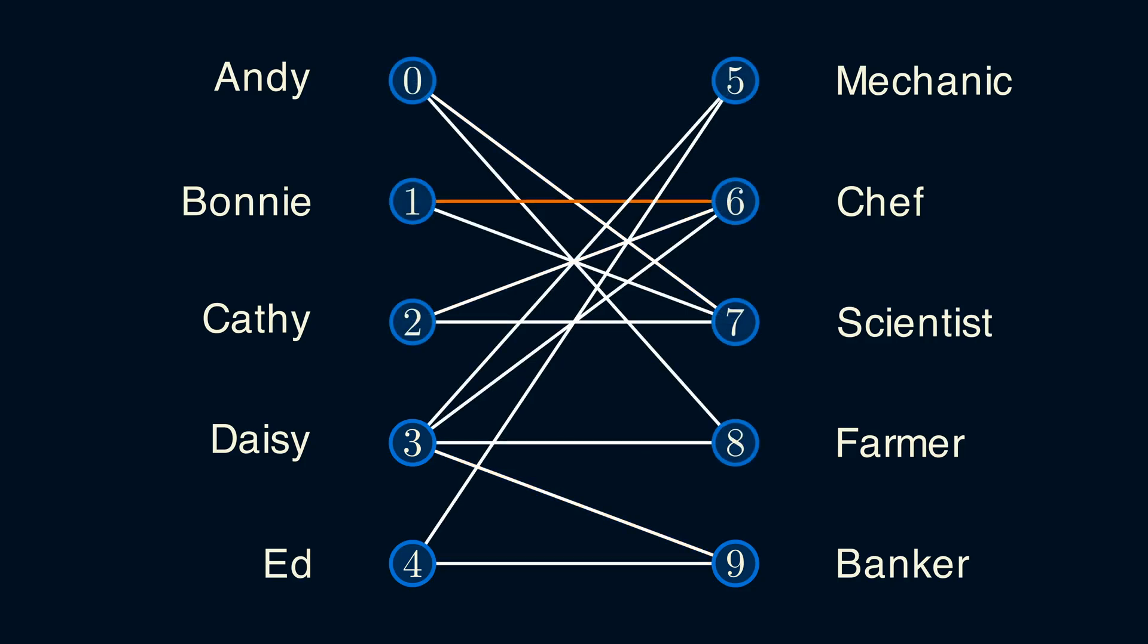Finally, this is also a matching. But it's really bad because only Bonnie has a job. Everyone else is unemployed. Our goal, then, is not just to find any matching because that's very easy, but to find a matching with the largest size.